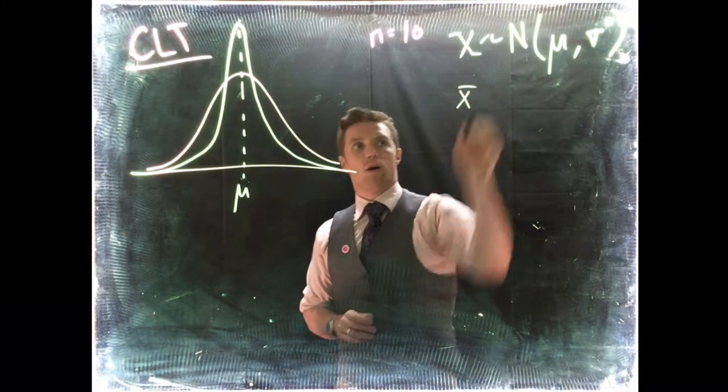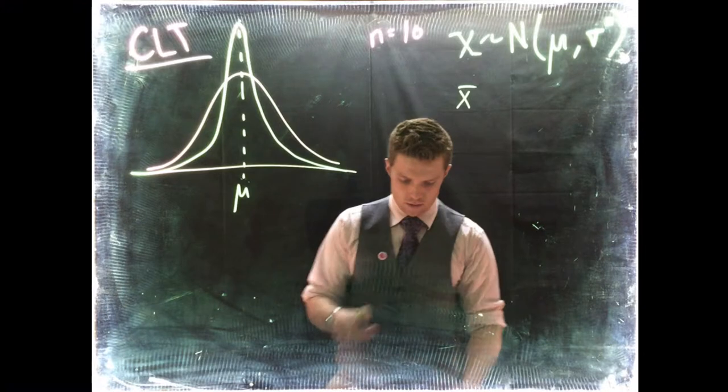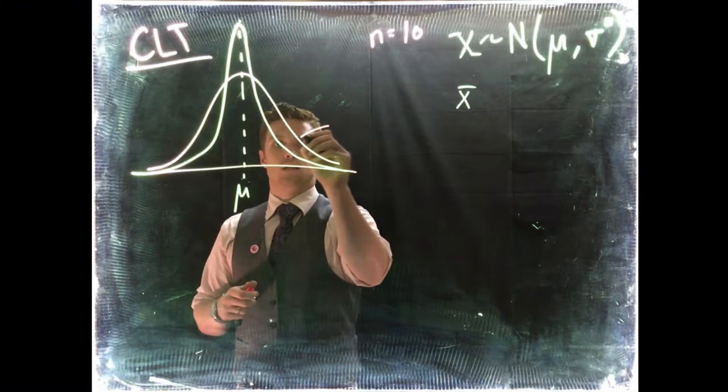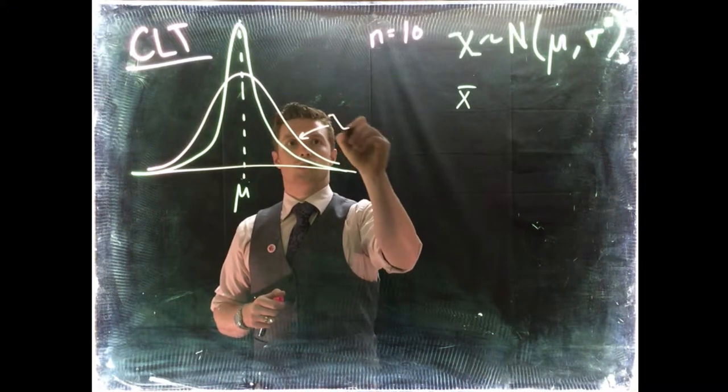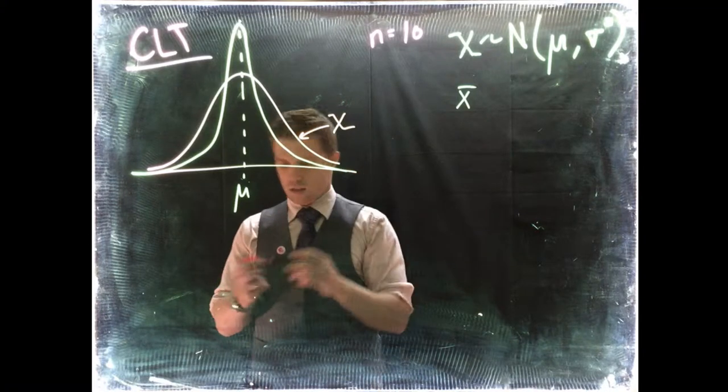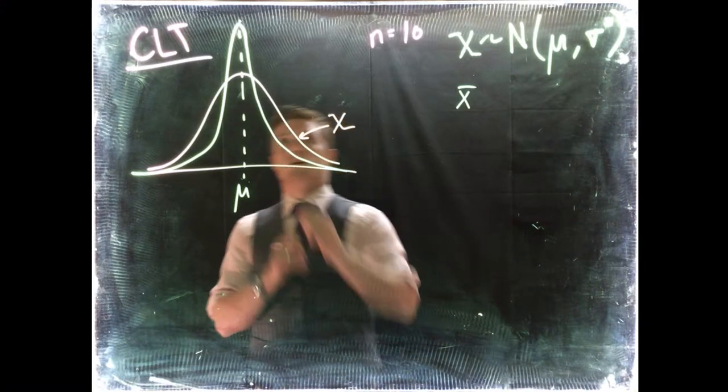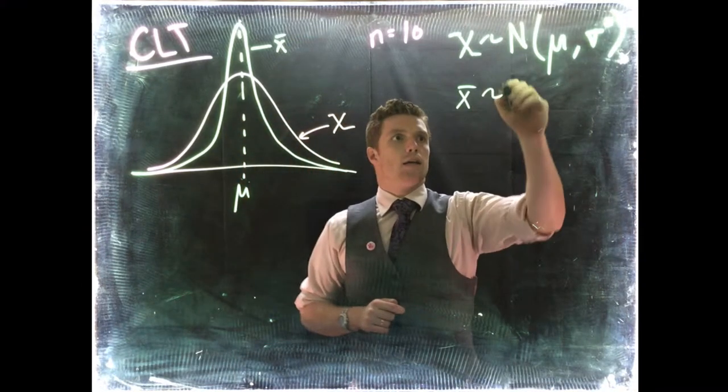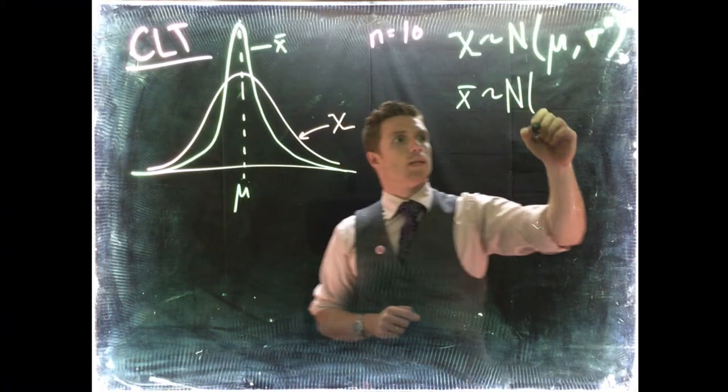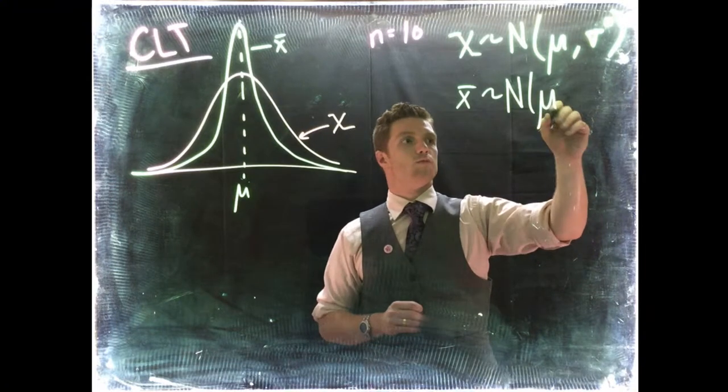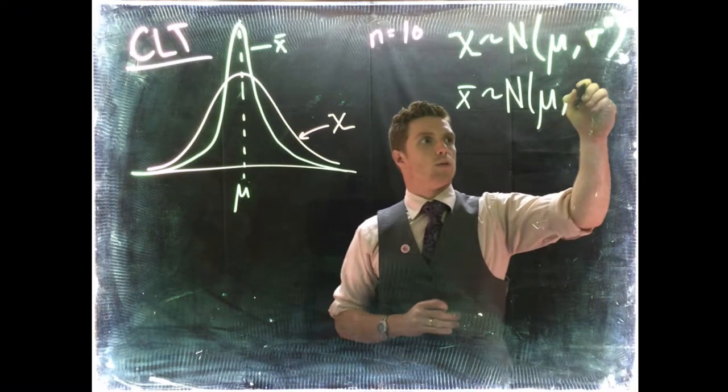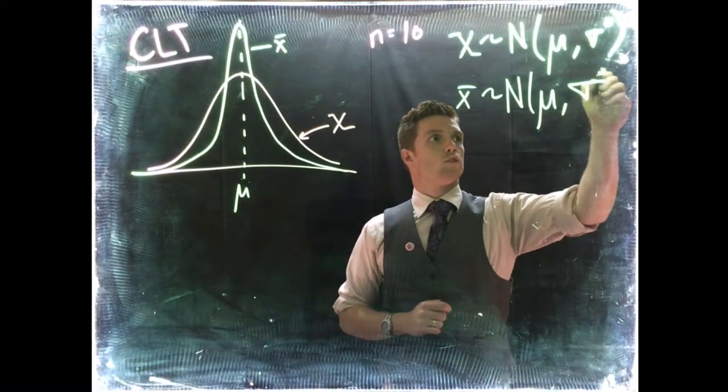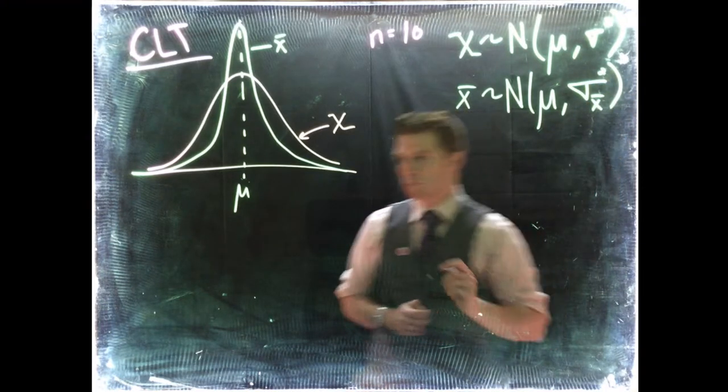We call this the distribution of X, of capital X. And then this narrower one that we were working on is the distribution of X bar. And we can say that that's distributed normally with the mean of mu, and this time it's going to be sigma squared, but with respect to X bar.